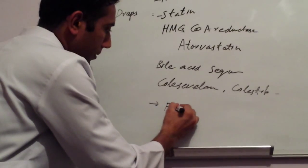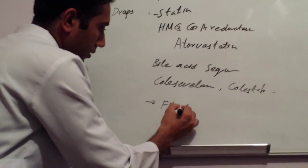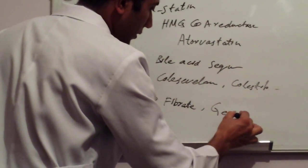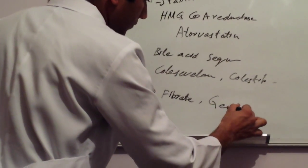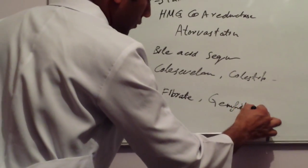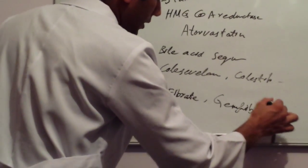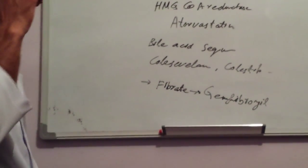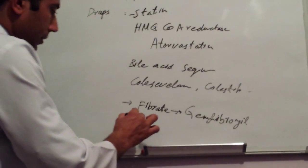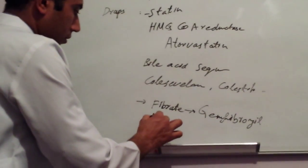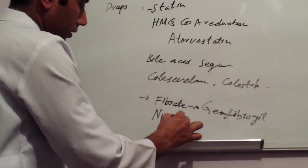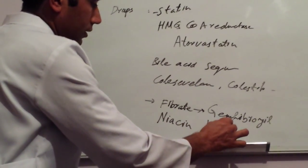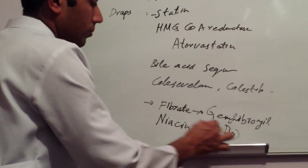The third family is called Fibrate. These drugs are Fenofibrate and Gemfibrozil. This drug is called Niacin. This is actually vitamin B3.